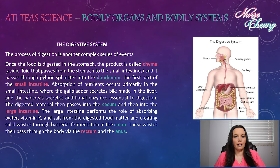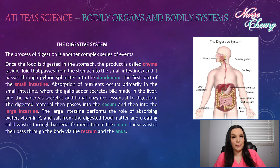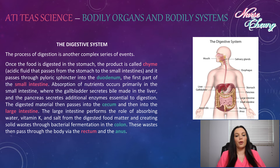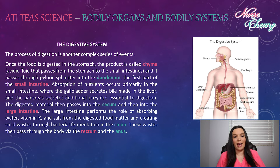The digested material then passes into the cecum and then into the large intestine. The large intestine performs the role of absorbing water, vitamin K, and salt from the digested food matter, and creates solid waste through bacterial fermentation in the colon. Then waste will be passed through the body via the rectum and the anus.